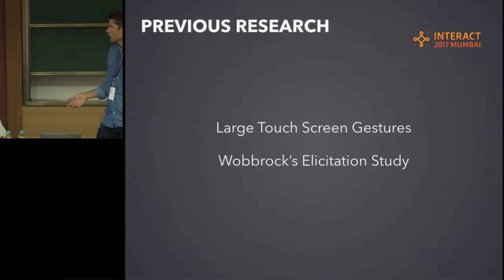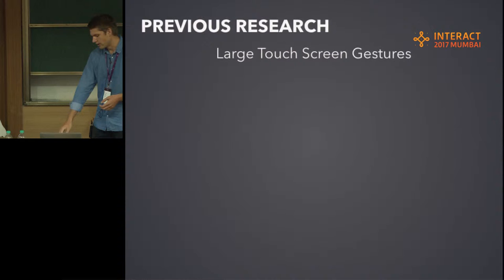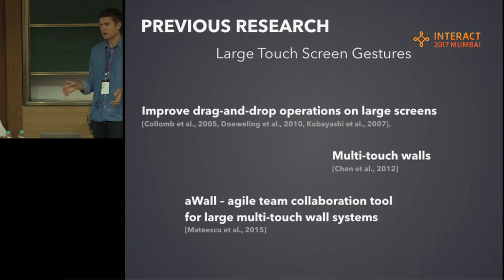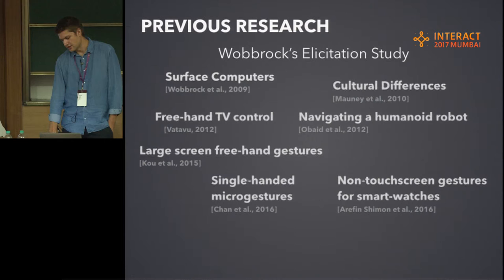We looked into previous research and divided it into two main categories. Some people looked at large touchscreen gestures in general — for example, an elicitation study done by Wobbrock, which is a user-centered approach where you ask users how they would define gestures themselves. For large touchscreen gestures, many looked at how to improve drag and drop operations, with variations from TV-screen sizes up to wall sizes of several meters, and also in collaboration contexts.